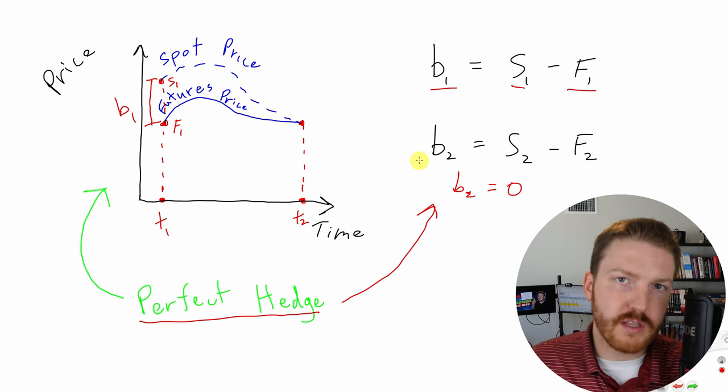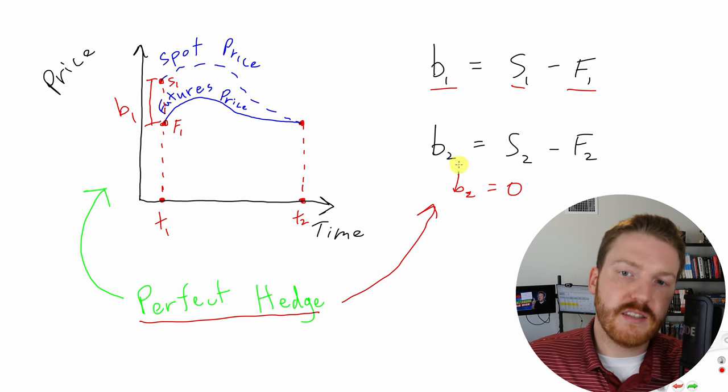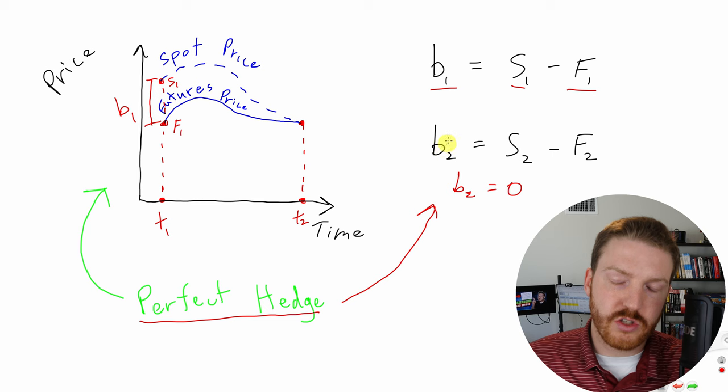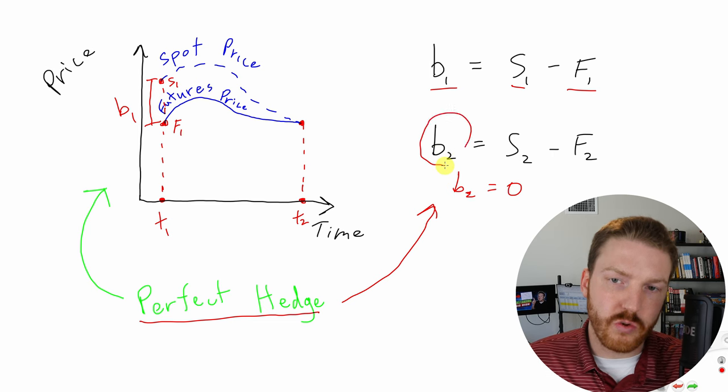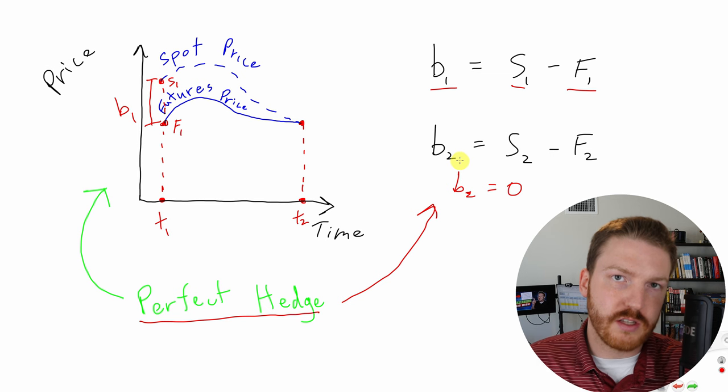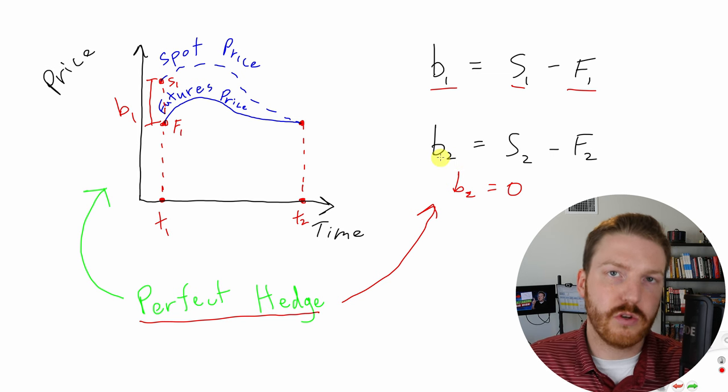Now, another way that we can define basis risk is the uncertainty associated with B2. And with the perfect hedge, there is no uncertainty associated with B2, so there's no basis risk. Now, let's look at an example on a graph that is not a perfect hedge. And let's go back to our gold mining example from earlier.